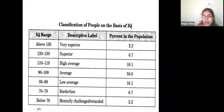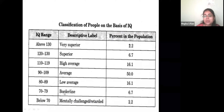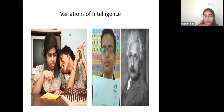Looking at the classification of people based on IQ: 90 to 109 is considered average; 80 to 89 is low average; 70 to 79 is borderline; and below 70, we call it mentally challenged or mentally retarded. On the other end of the spectrum is very superior IQ, above 130. These variations in intelligence span from completely low IQ on one end to super IQ on the other.